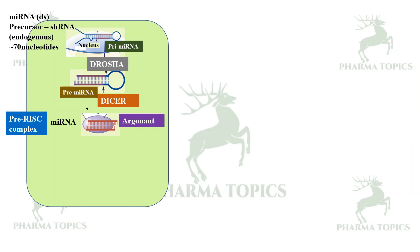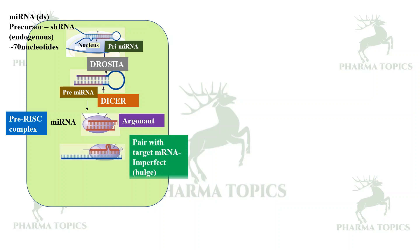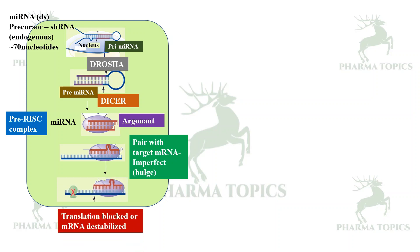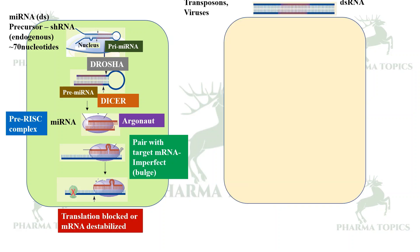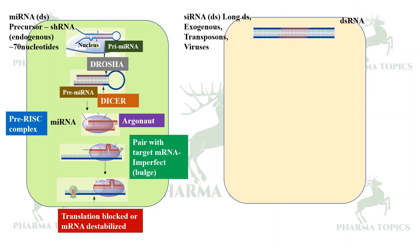The miRNA then binds to the RNA-induced silencing complex (RISC) along with Argonaute proteins. This complex pairs with the target mRNA — perfect pairing is not required. If imperfect pairing occurs, it causes bulging in the target miRNA. The net result is that translation of the target mRNA is blocked or the mRNA is destabilized.